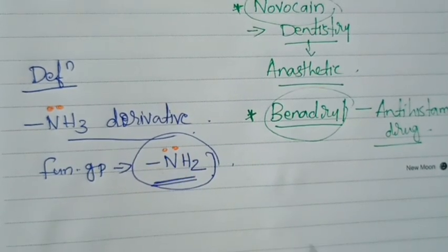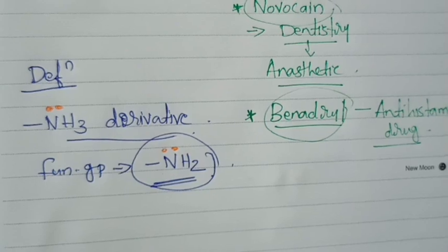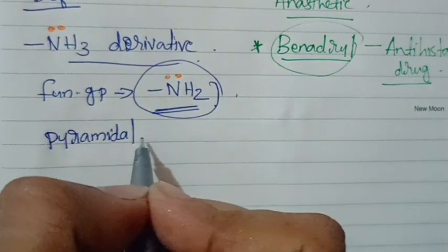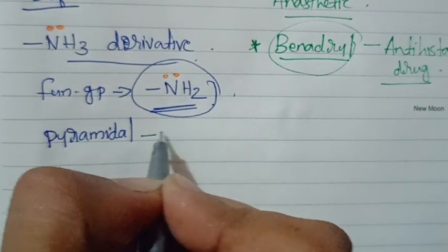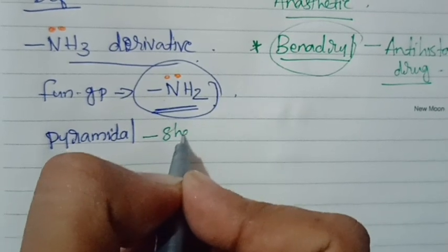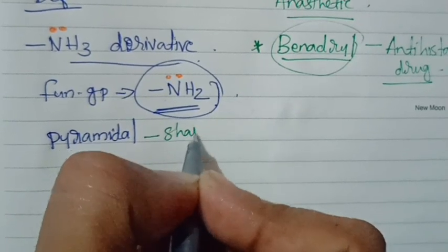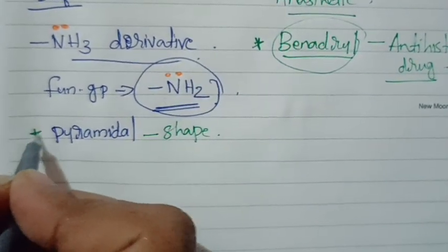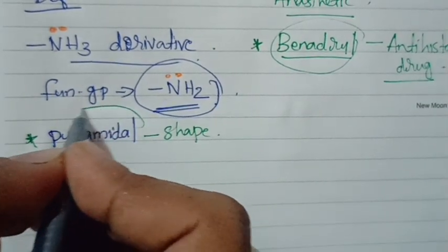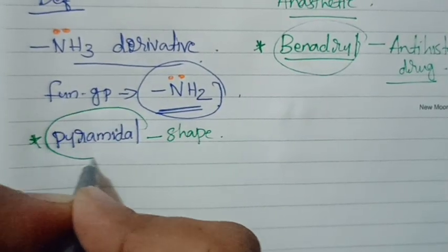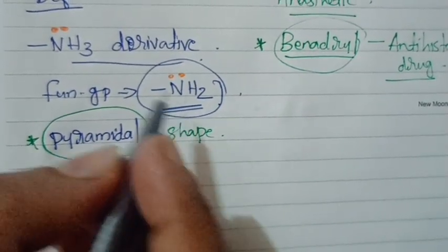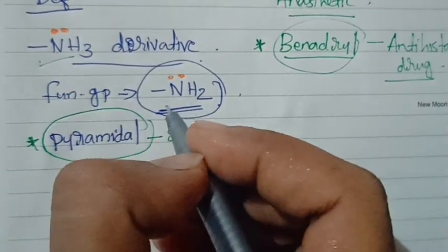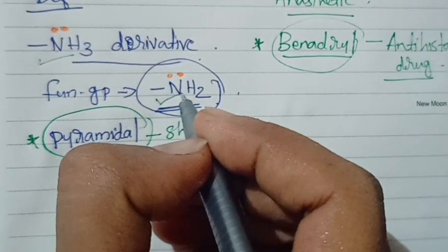In amines, the nitrogen contains a lone pair of electrons. This is the similarity between ammonia and amines — both have nitrogen with a lone pair. Both ammonia and amines show pyramidal geometry.